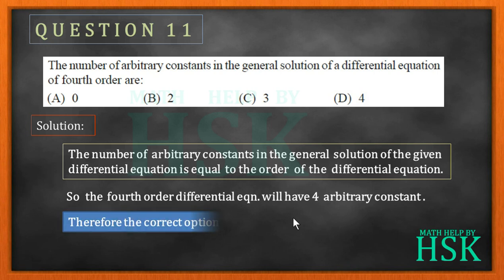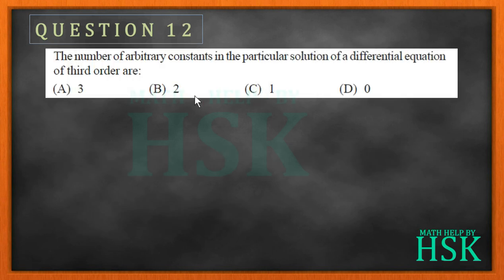So this implies that option D is the correct option. In the next question: the number of arbitrary constants in the particular solution of the differential equation of third order — how much? So we have to tick mark the correct option again.